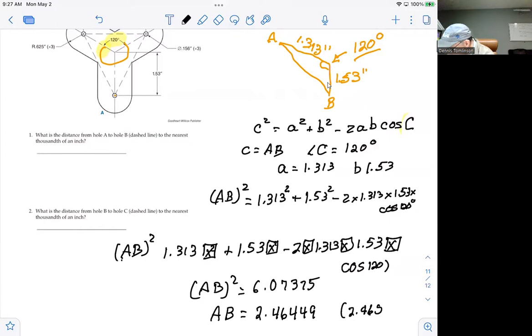And then when I take the square root of that, I get 2.464, 2.6449. And the answer that the author gives is 2.465. And what I get is just a little bit short of rounding up to that. Okay. So 2.465 inches.